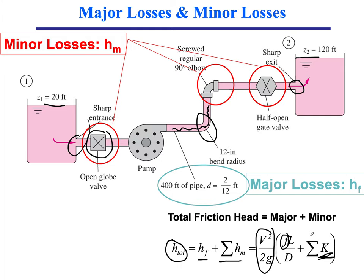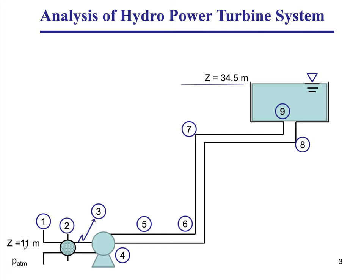The pipe fitting friction loss coefficient is obtained from plots provided by the manufacturer of the specific pipe fittings, such as a valve. We will see a couple of those in this video. Moving on, our product is the energy equation, and what we want to analyze is a water turbine system.